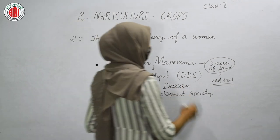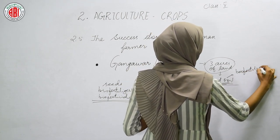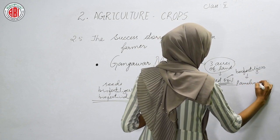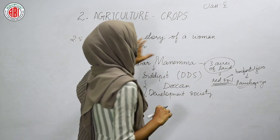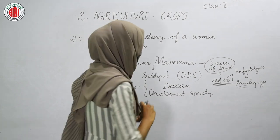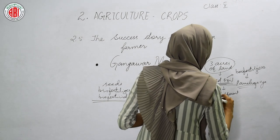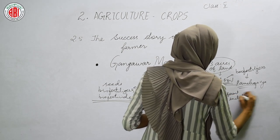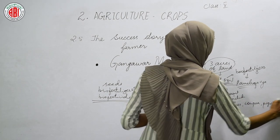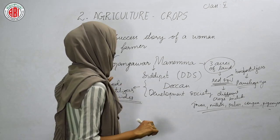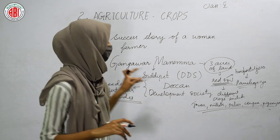She made the soil fertile by applying bio-fertilizers and Panch Gavia — a natural manure — in her field. By pouring these bio-fertilizers she made the land so fertile that she was able to grow different crops including jowar, millet, pulses, cow pea, pigeon pea, and many more.